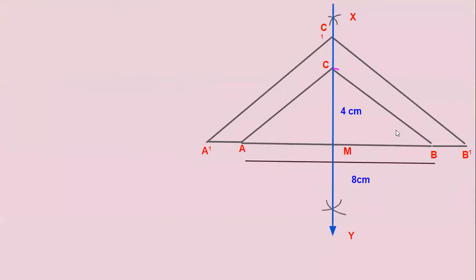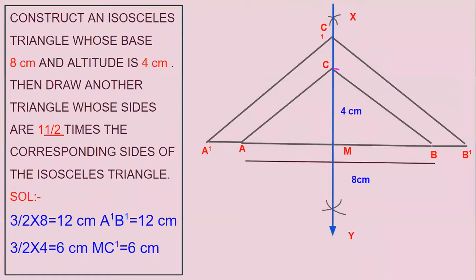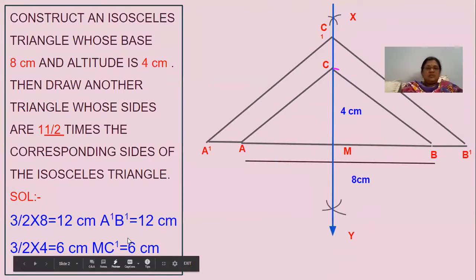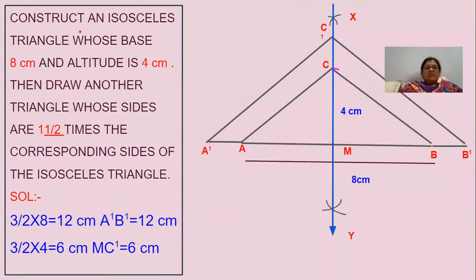Let us see the problem. Construct an isosceles triangle whose base is given as eight centimeters and altitude is given as four centimeters. Then draw another triangle whose sides are one and a half times — that is three by two — the corresponding sides of the isosceles triangle. To construct this similar triangle, we have to complete the previous work first.